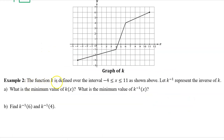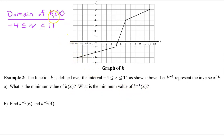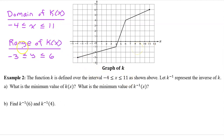Example 2: the function k is defined over the interval from negative 4 to 11. Let k inverse represent the inverse of k. Part A: what is the minimum value of k of x? The domain of k of x is from negative 4 to 11. The range of k of x goes from negative 3 to 6. That answers the first question — k of x has a minimum value of negative 3, the lower end of the range.